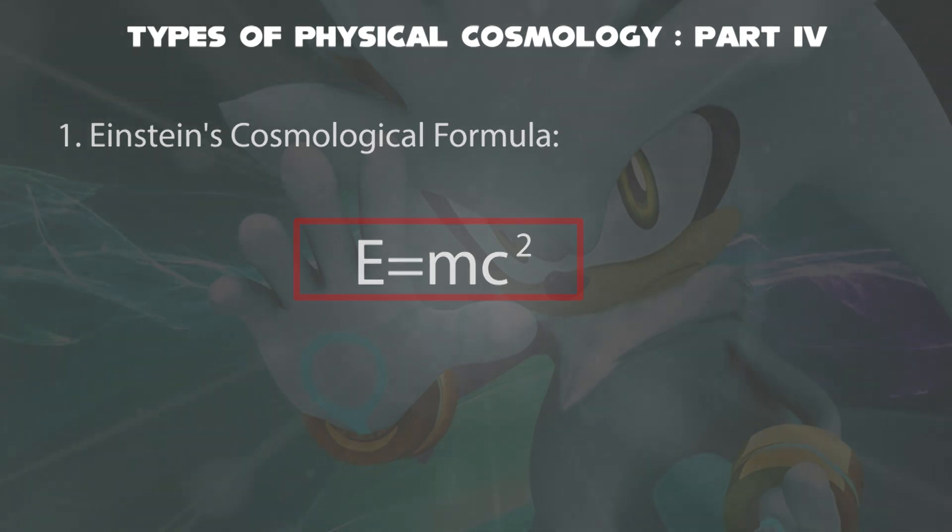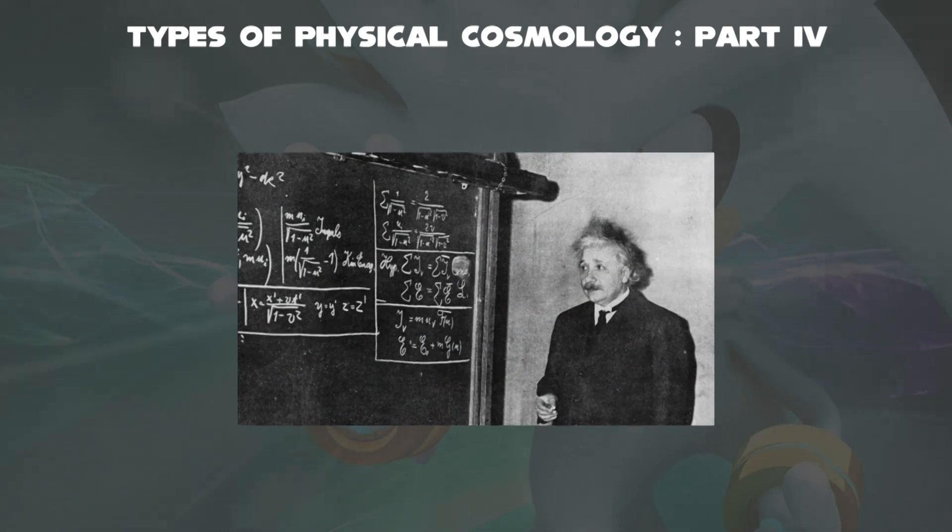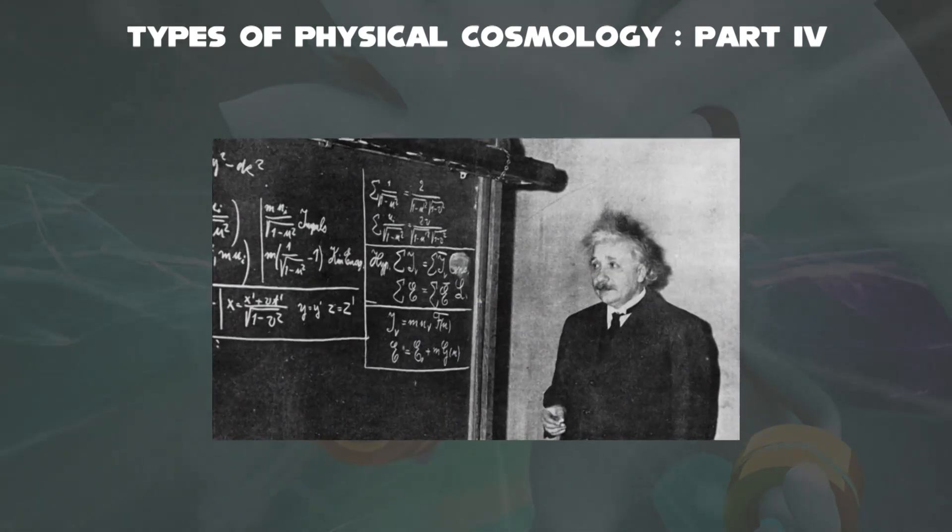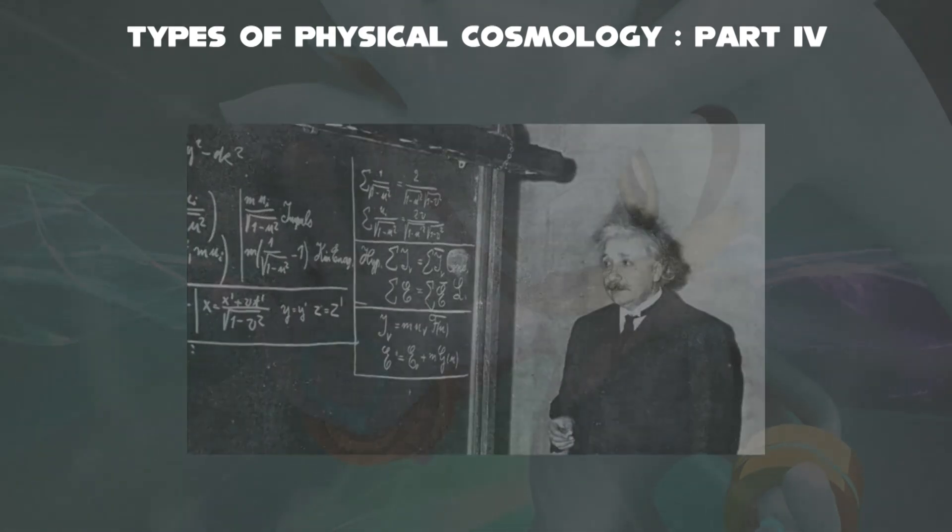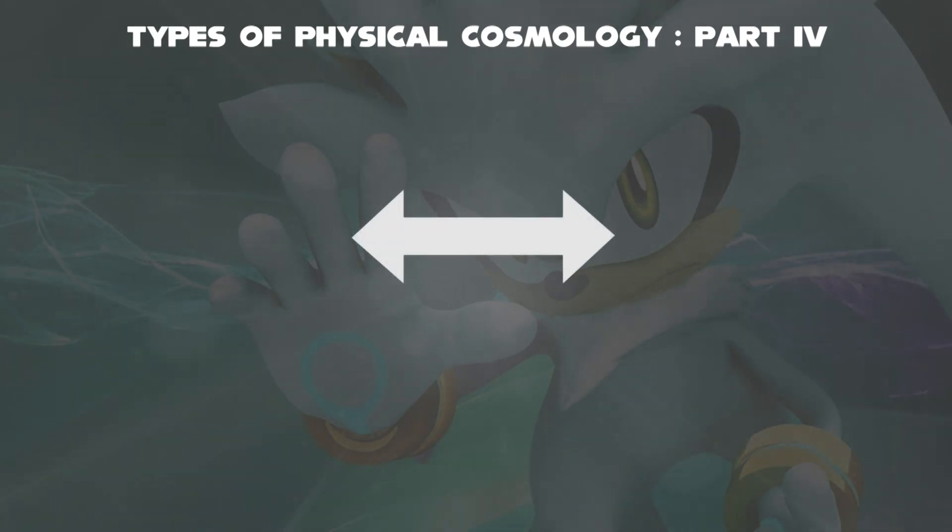The equation is famous because it's associated with the atomic bomb in 1945 report prepared for the US government during the Manhattan Project. It explains how nuclear reactions, such as nuclear fission and nuclear fusion, release enormous amounts of energy by converting a tiny fraction of mass into usable energy.